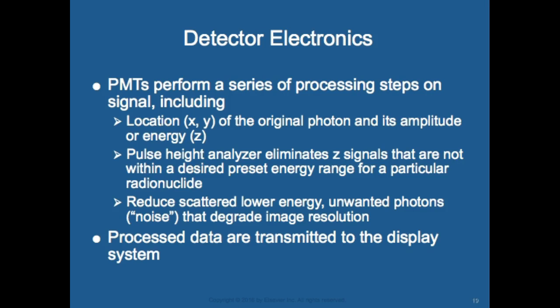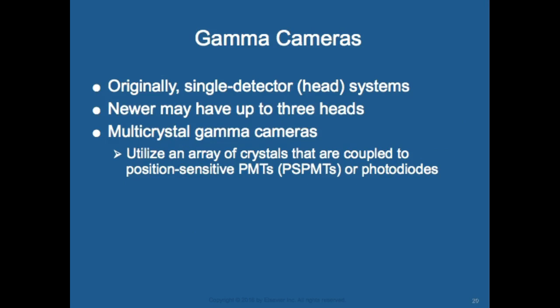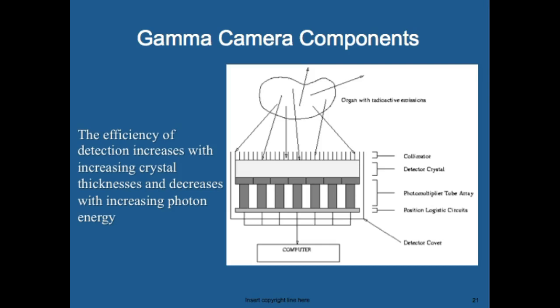The pulse height analyzer acts like a filter, reducing scatter, low energy, and unwanted photons — what we call noise — that degrade image resolution. Processed data are transmitted to the display system. Newer systems may have up to three heads, and multi-crystal gamma cameras utilize an array of crystals coupled to position-sensitive PMTs or photodiodes. The effectiveness of detection increases with increased crystal thickness and decreases with increased photon energy.